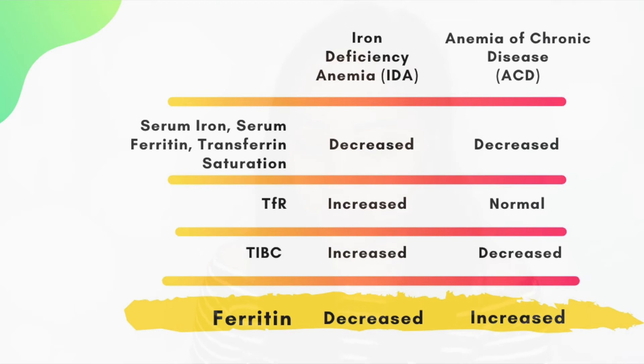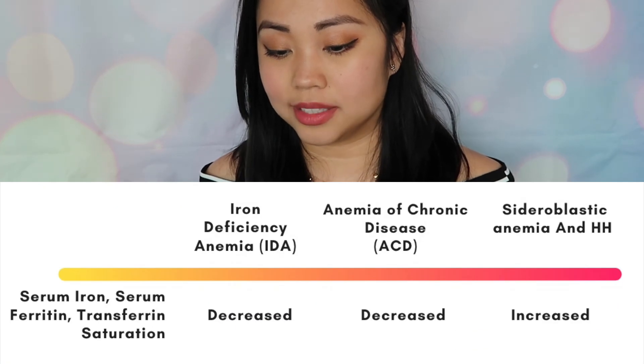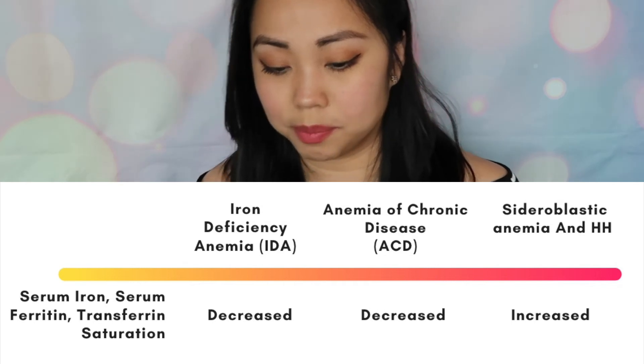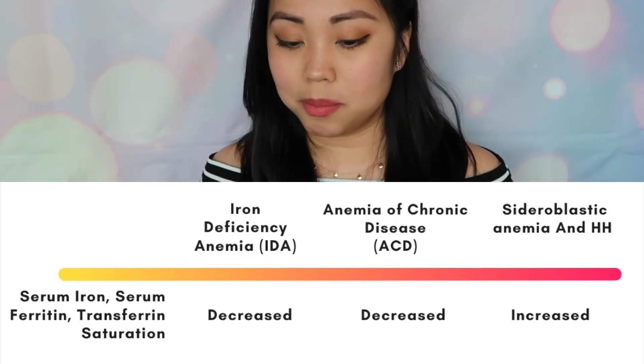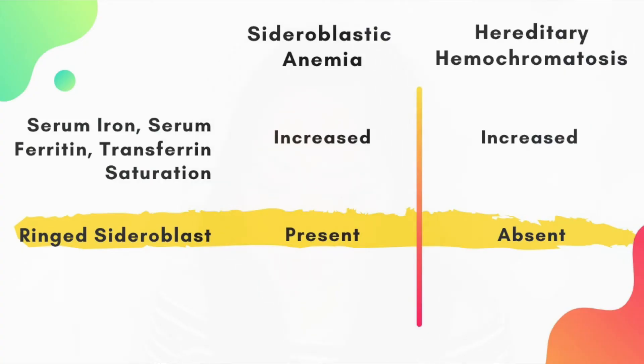For anemia of chronic disease, iron is low but ferritin is high — that's the key difference from iron deficiency anemia. In anemia of chronic disease, you have iron in storage, but there's a disconnect between transferring that stored iron into hemoglobin and erythroid production. So ferritin being high separates it from IDA.